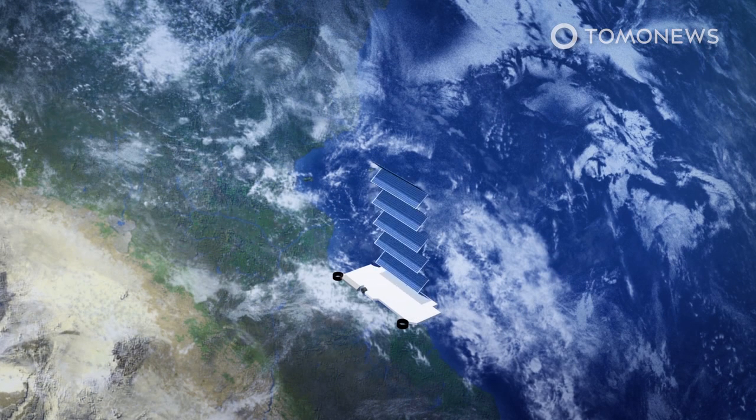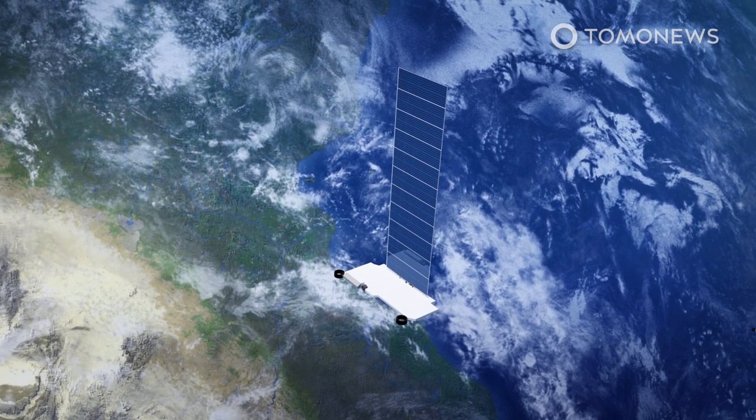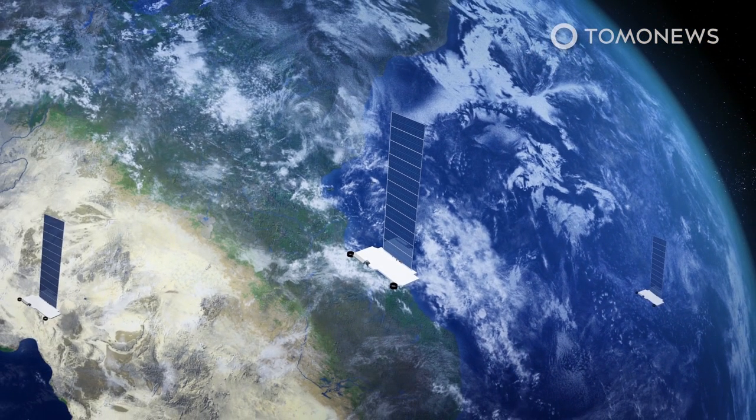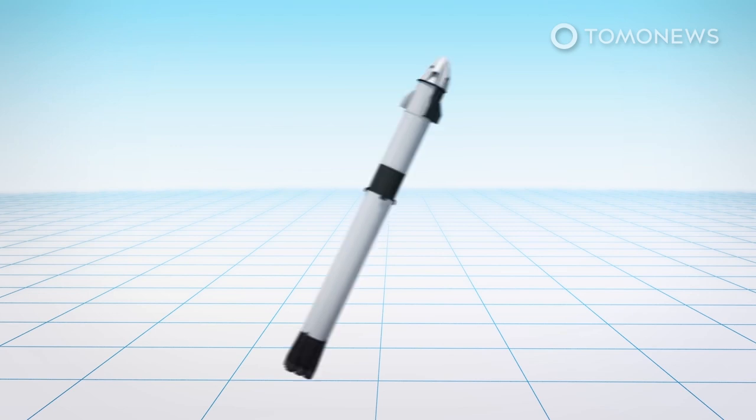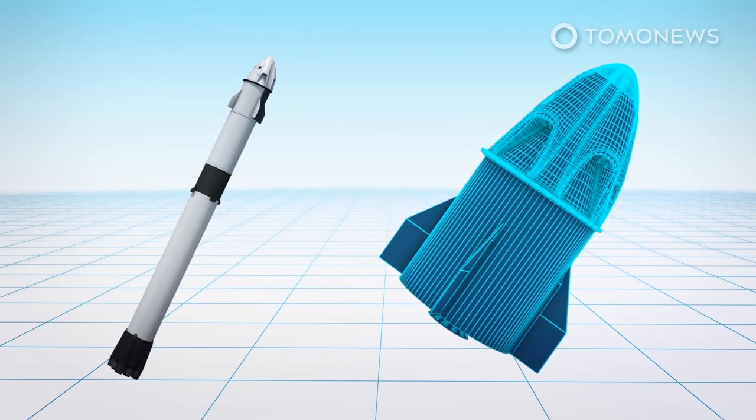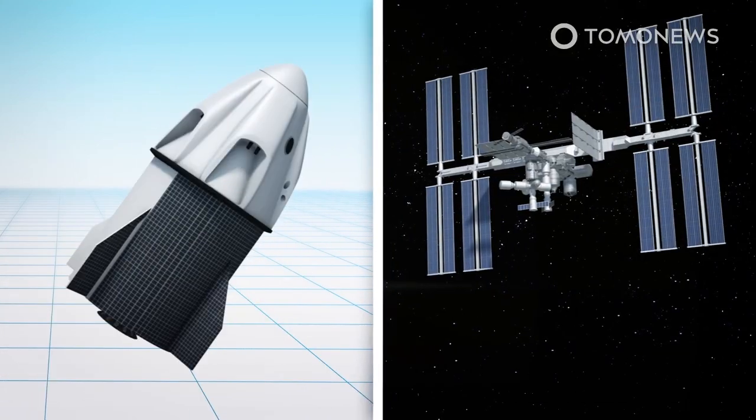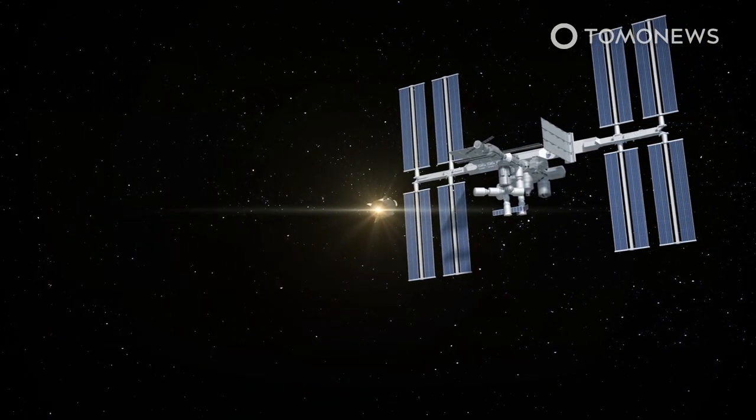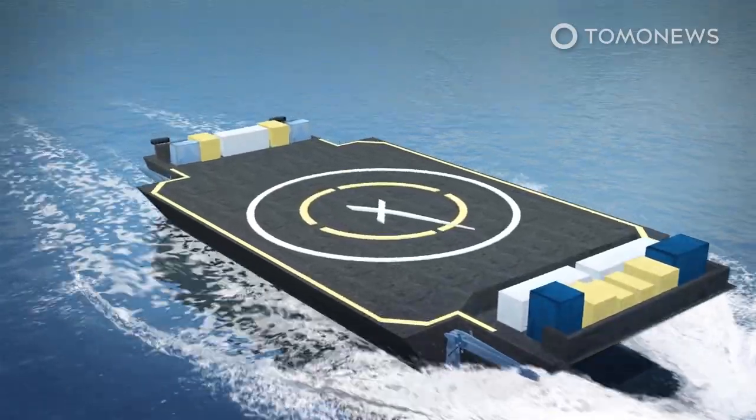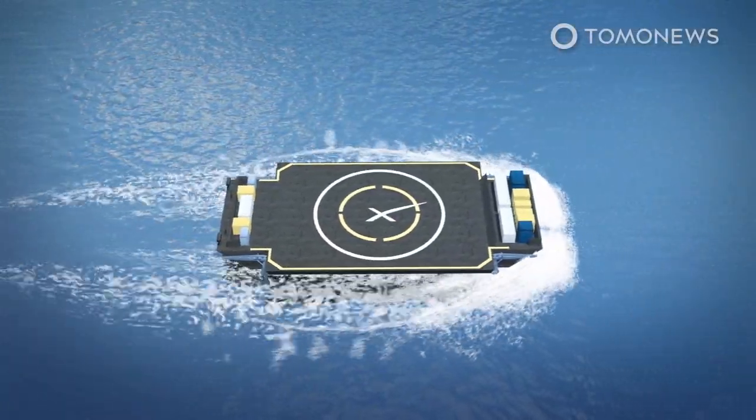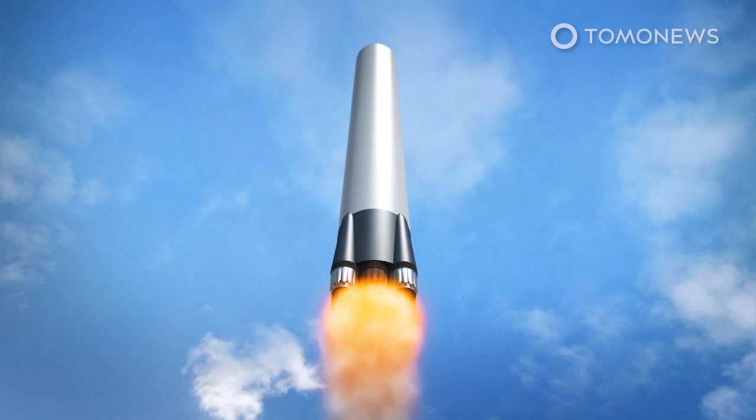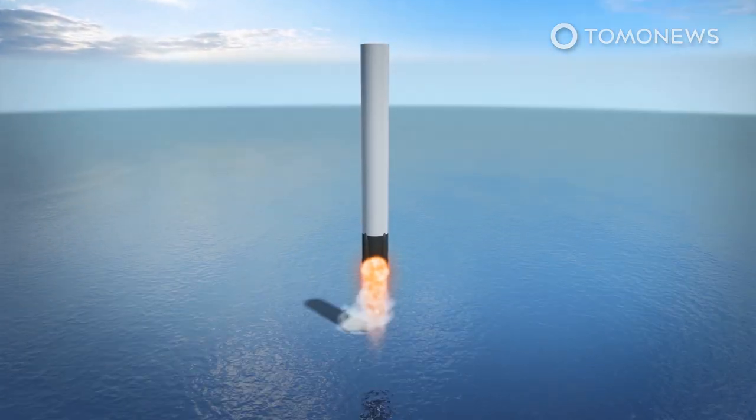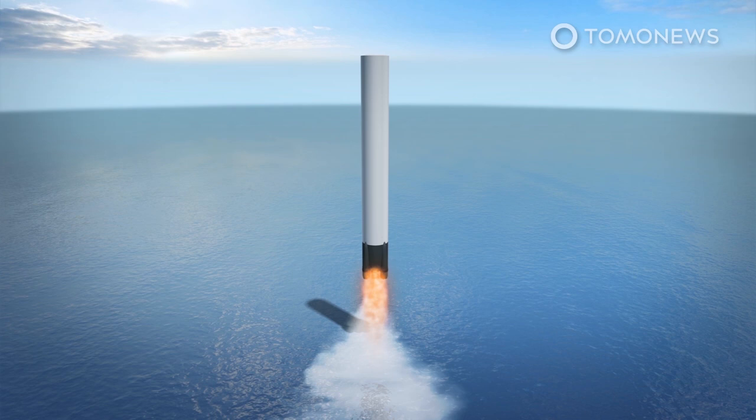Space.com reports the latest launch brought the Starlink constellation up to nearly 300 satellites. The launch marked the fourth time the company used a booster four times. This rocket's earlier missions include a satellite launch and two runs to replenish the International Space Station last year. However, the rocket apparently missed the drone ship Of Course I Still Love You and made a soft landing in the seas near the robotic vessel. Space.com reports that the company is hopeful that the rocket can still be retrieved, citing SpaceX.